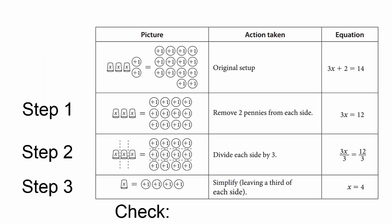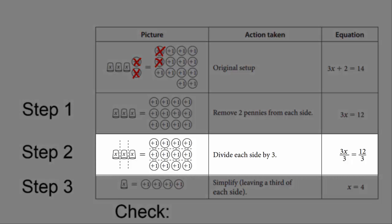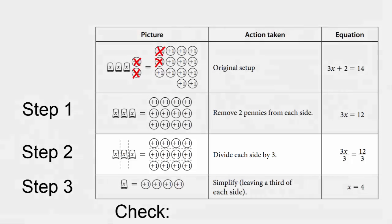This setup models the equation 3x plus 2 equals 14 with cups and pennies. We want to figure out how many pennies go in one cup. First, we want to get the cups by themselves, so we'll remove two pennies from the left side. But to keep things balanced, we also need to remove two pennies from the right side. So we just remove two pennies from each side. We don't care how many pennies go in three cups. We want to know how many pennies go in just one cup. So we'll divide each side into three groups. After simplifying, we see that one cup equals four pennies.